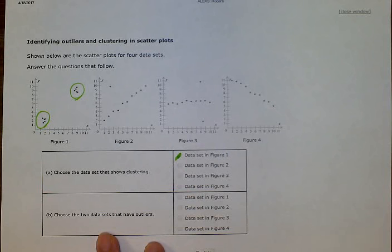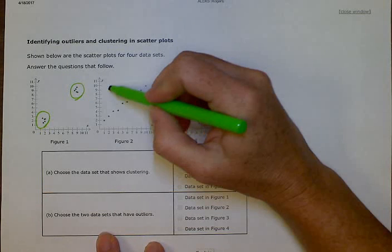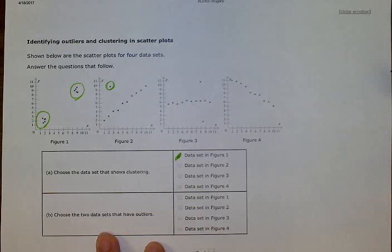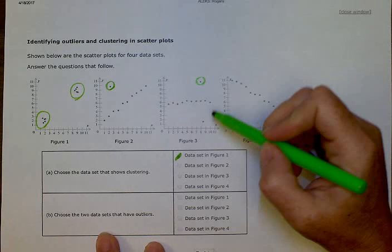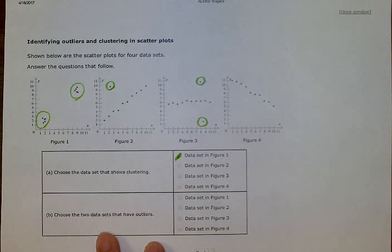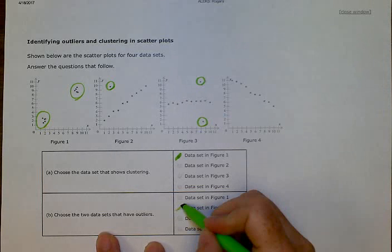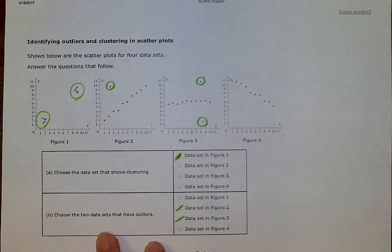So on figure two, we have an outlier over here. And on figure three, we have outliers up above and below. On figure four, everything is basically in a line. So I'm going to choose figure two and figure three for those that have outliers.